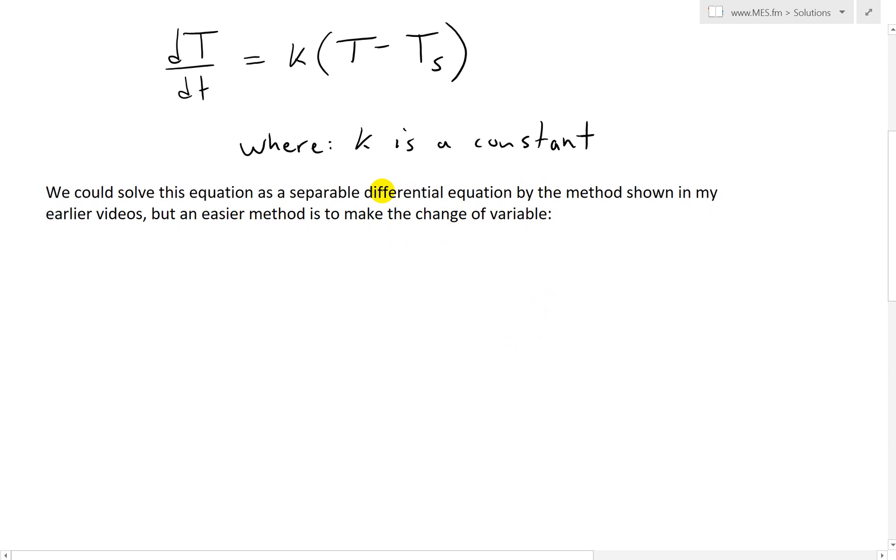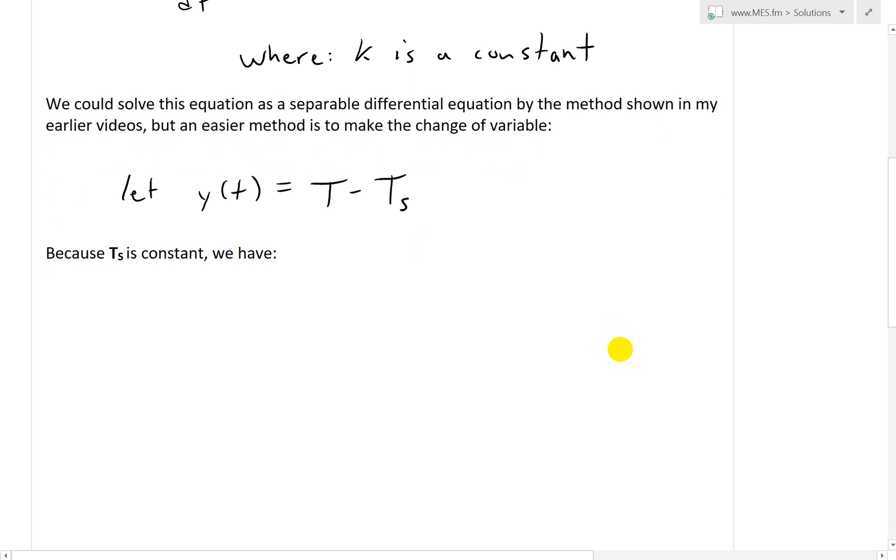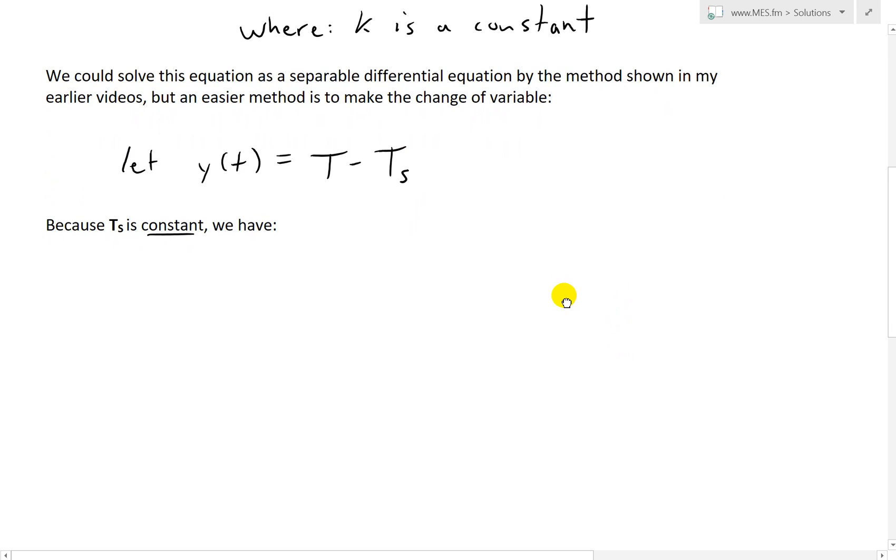But an easier method is to first simply change the variable. Instead of working with the difference, we let y of t equal this difference, T minus T_s. Because the temperature of the surroundings T_s is constant, we'll assume it's constant for our case.